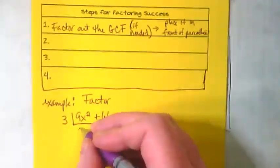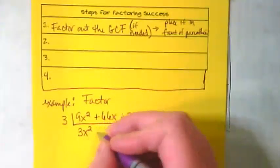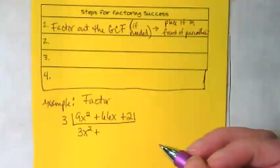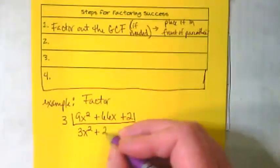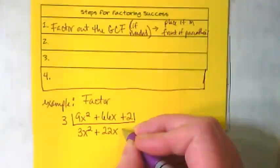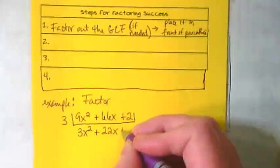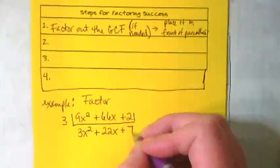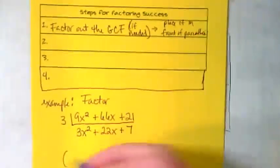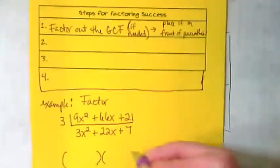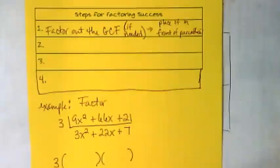9 divided by 3 is 3x squared. 66 divided by 3 is 22x. And 21 divided by 3 is 7. So now I've got this, I want to set up my parentheses, and I'm going to put that 3 in front.